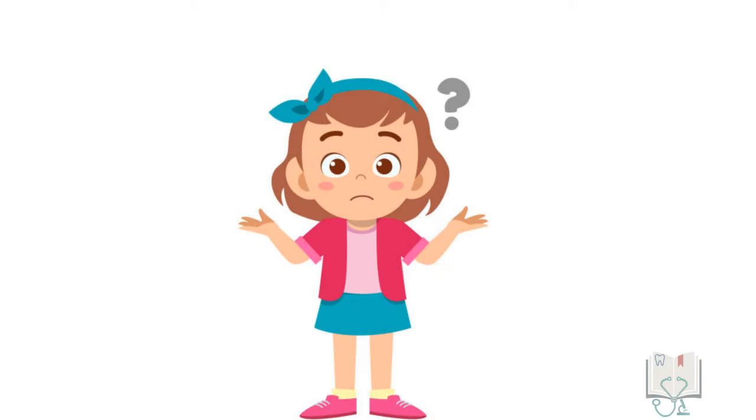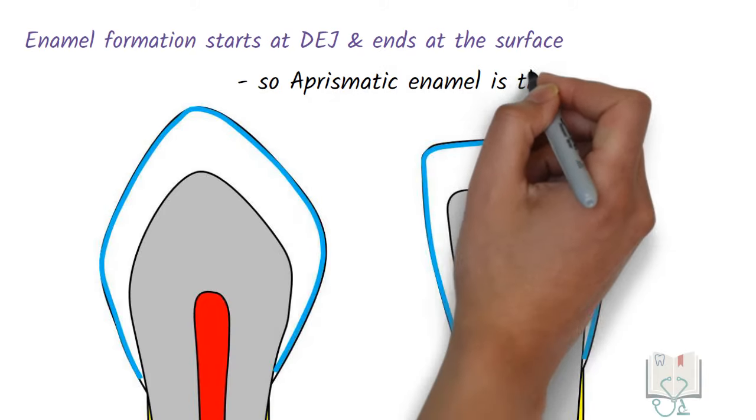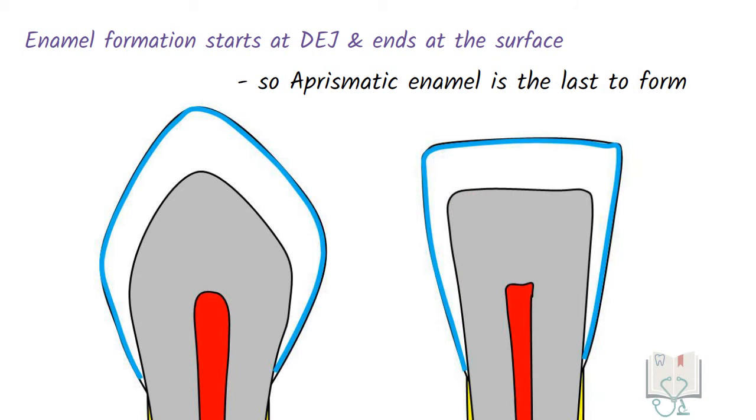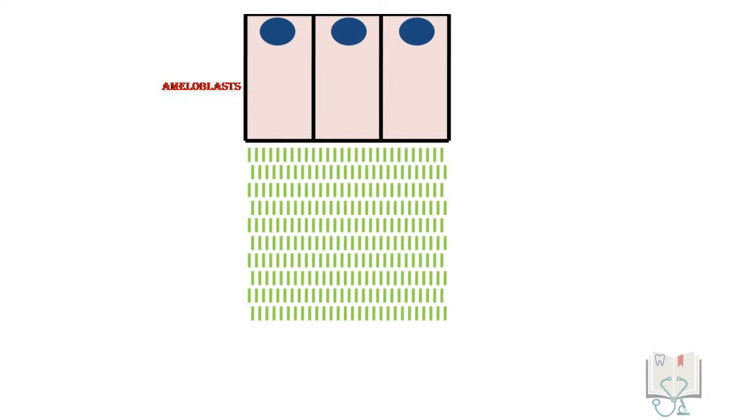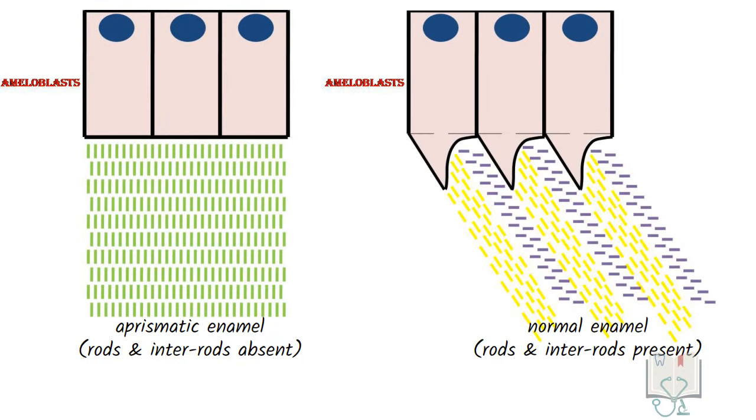Now, how is it so formed? Aprismatic enamel is the last layer of enamel formed by ameloblast. And by this point, ameloblasts lose their tomes process. All hydroxyapatite crystals formed are perpendicular to the surface, parallel to each other. Therefore, there is no change in angulation of crystals.